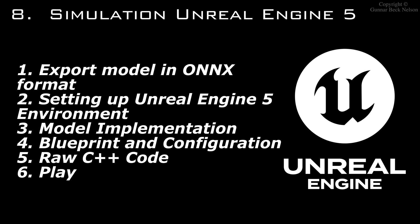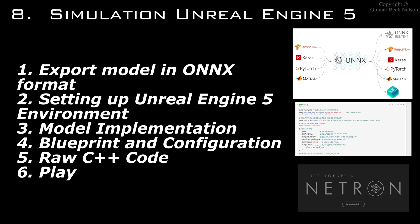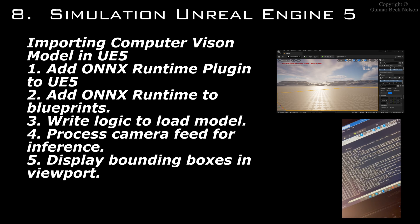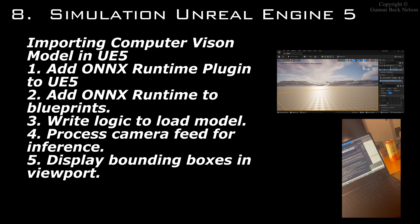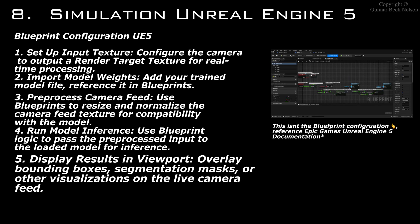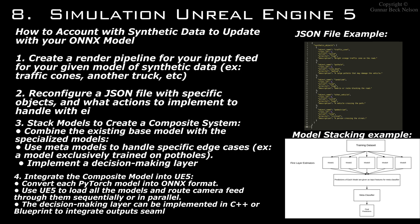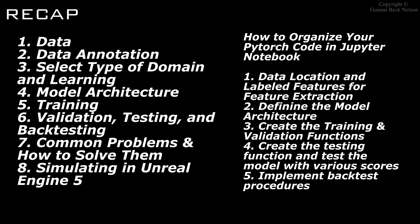Next, we need to export our model and put it into Unreal Engine 5. We export the model in ONNX format. This is how we place our computer vision model alongside our 3D model in Unreal Engine 5, implement the blueprint configuration, write the raw C++ code, and account for synthetic data — such as adding new objects — so the model can continue to update and improve.